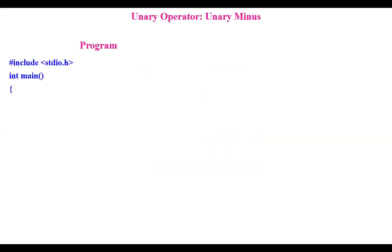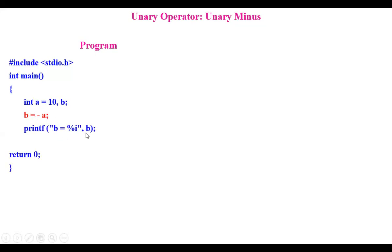Let us first see unary minus with a simple program. An integer a is declared with value 10, and b is equal to minus a. The value of a is converted to negative and assigned to b. So b will be minus 10. That's the unary minus.